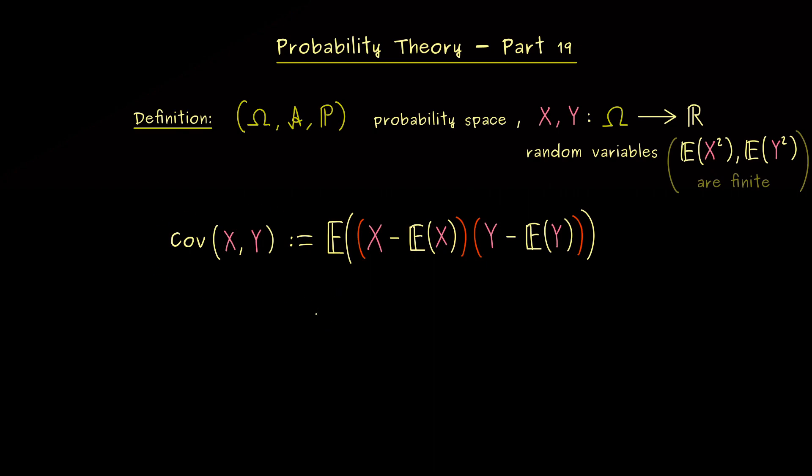However, similar to the ordinary variance, we can reformulate this formula here. This means, we just expand this product here. So we get X times Y minus X times the expectation of Y. And similarly, minus Y times the expectation of X.